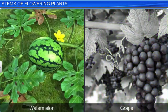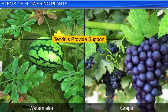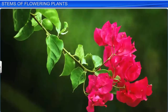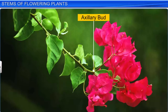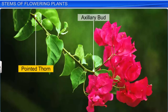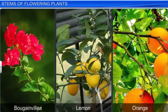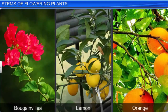In some plants like watermelon and grape, slender and spirally coiled stem tendrils emerge from axillary buds. The stem tendrils are modified stems that help the plant to climb. Sometimes, the axillary buds on the stem get modified into straight, woody, and pointed thorns, which protect the plant from grazing animals. Plants like bougainvillea, lemon, and orange are typical examples where the axillary buds get modified into thorns.